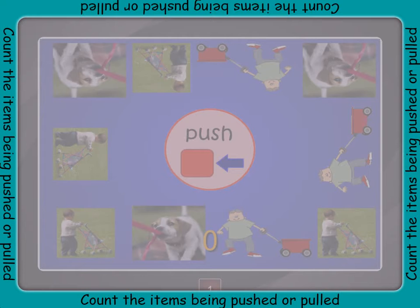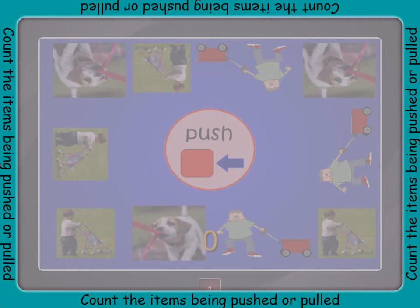You must count the number of items either being pushed or pulled. To see what items you must count, look at the colored circle in the middle. The green circle shows an arrow moving away from a box — this means pull. The red circle shows an arrow moving toward a box — this means push. Count the pictures showing pushes or pulls and use the blocks to show the answer.